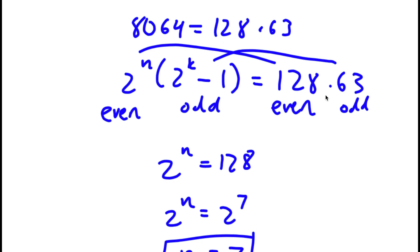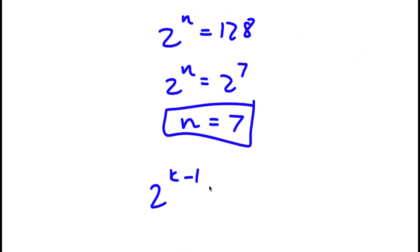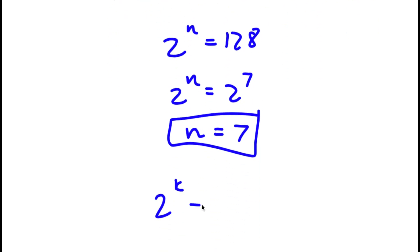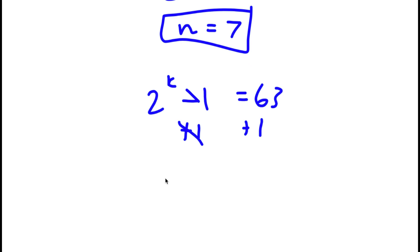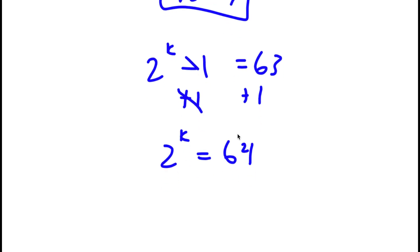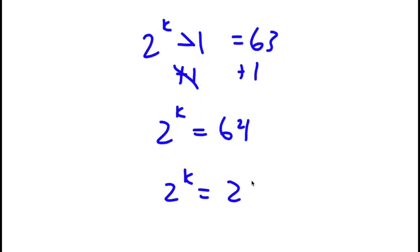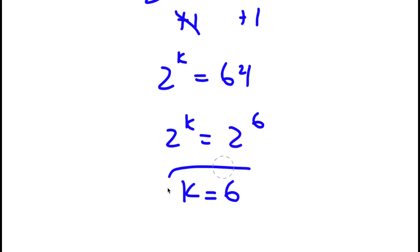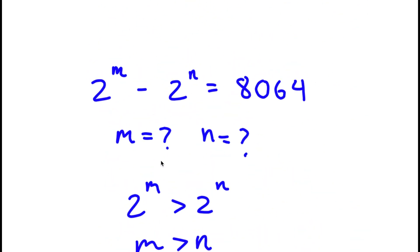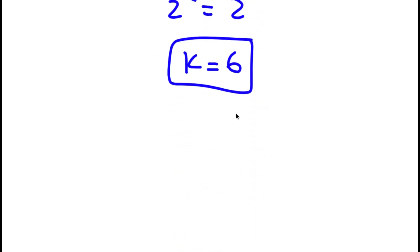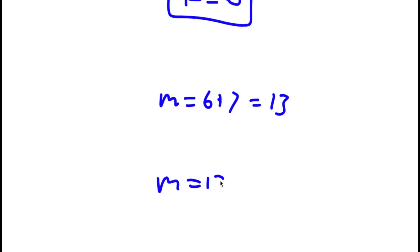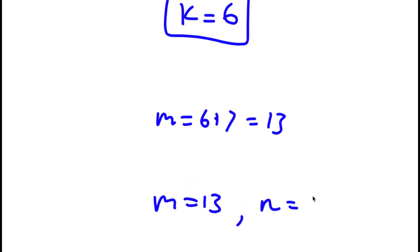For the odd parts: 2 to the power of k minus 1 equals 63. Adding 1 to both sides gives 2 to the power of k equals 64, which is 2 to the power of 6, so k equals 6. Now, remember m equals n plus k. With n equal to 7 and k equal to 6, m equals 6 plus 7 which is 13. So m equals 13 and n equals 7.